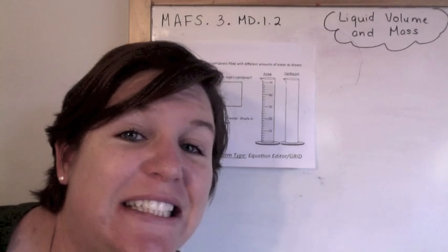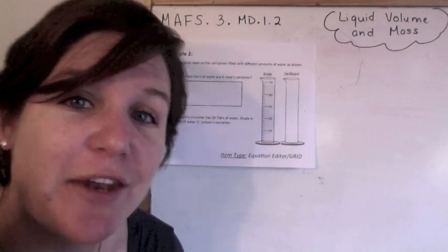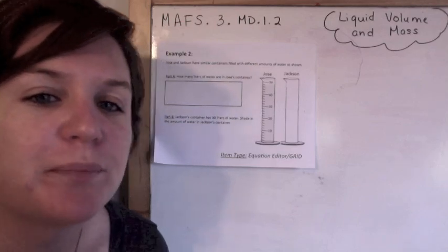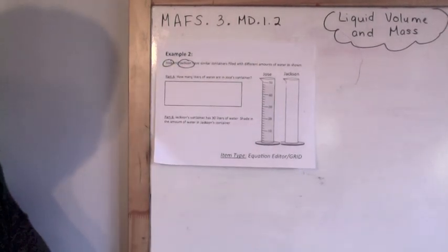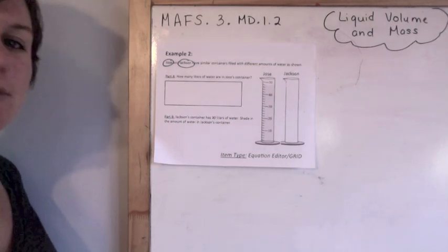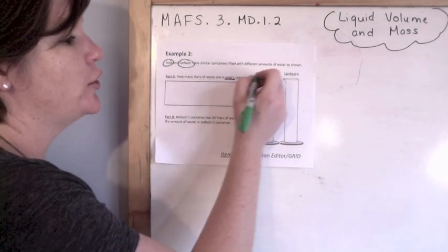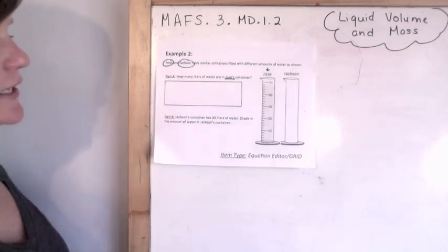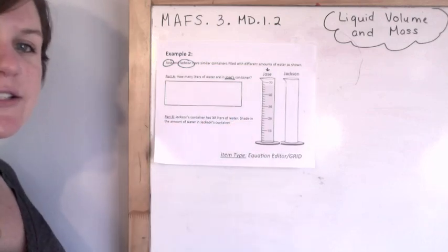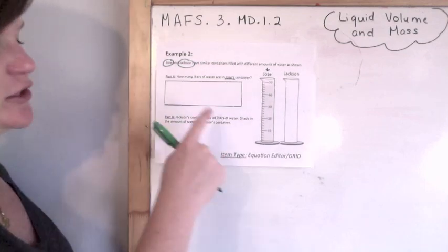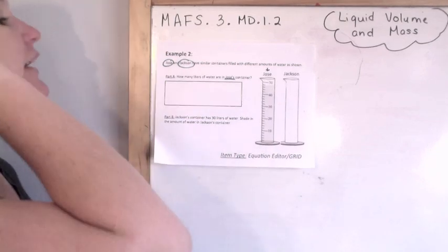I brought this one a little bit closer because the font is kind of small, but if you have your edition that you downloaded using the link below, it won't be too small for you. Jose and Jackson have similar containers filled with different amounts of water. There are two parts. Part A: how many liters of water are in Jose's container? Part B: Jackson's container has 30 liters of water — shade in the amount of water in Jackson's container.